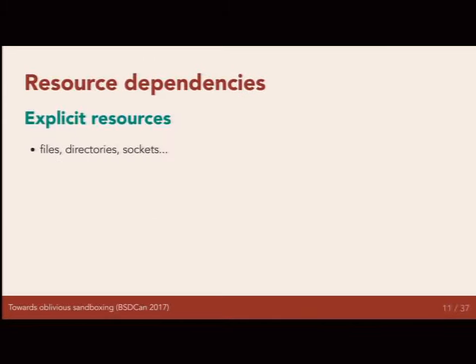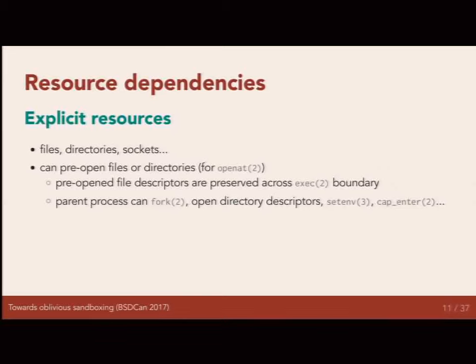What kinds of resources do applications tend to depend on? Some are quite explicit: files, directories, and sockets — file descriptors refer to all of these things, so that's very nice. We can handle those by pre-opening them. Before we call cap_enter, we can open files and directories and use openat later with those directories. These things are preserved across exec — unless set to be closed on exec, you still have access inside your newly executed process.